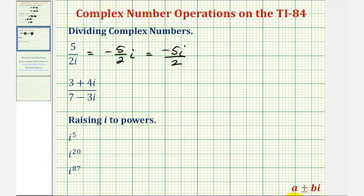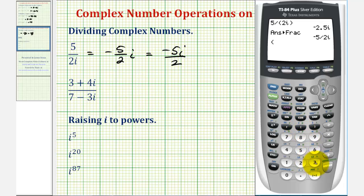Now let's take a look at our second example of division. We have the complex number three plus four i, divided by the complex number seven minus three i. And these parentheses are necessary to indicate which complex number is in the numerator, and which is in the denominator. So we'll press enter. Notice how this is messy, so we'll convert this back to a fraction by pressing math, enter, enter.